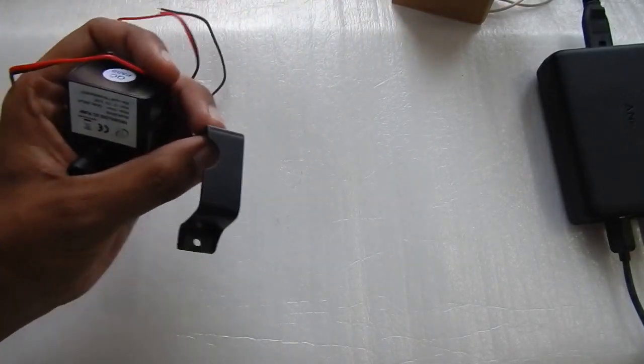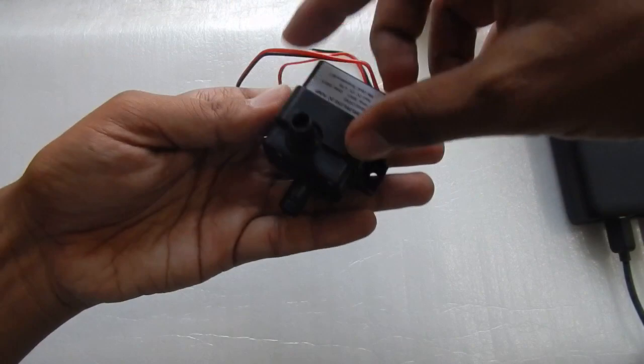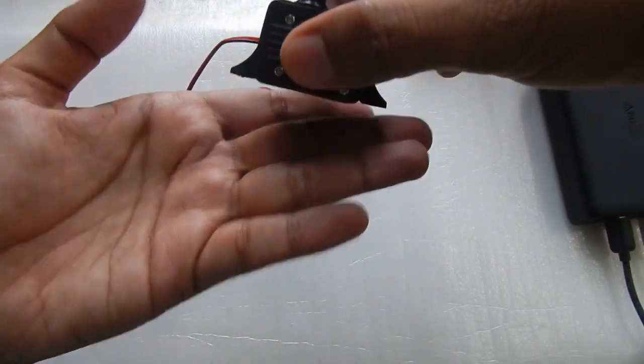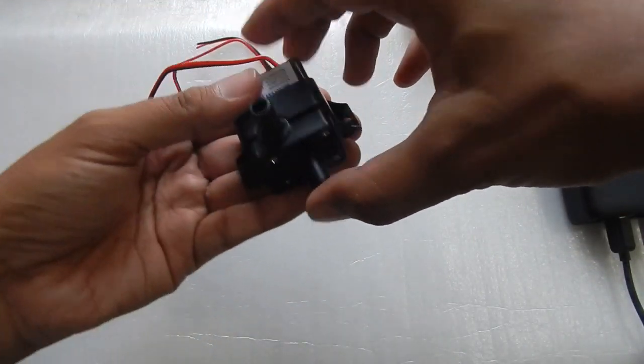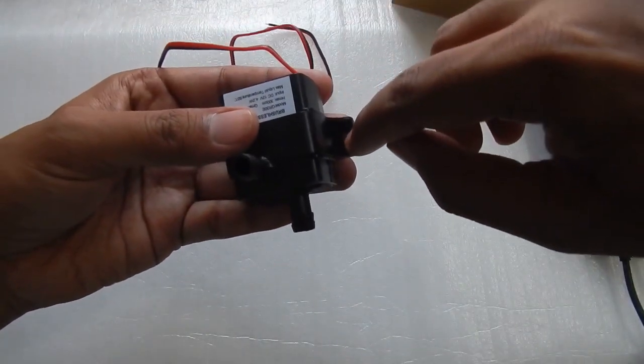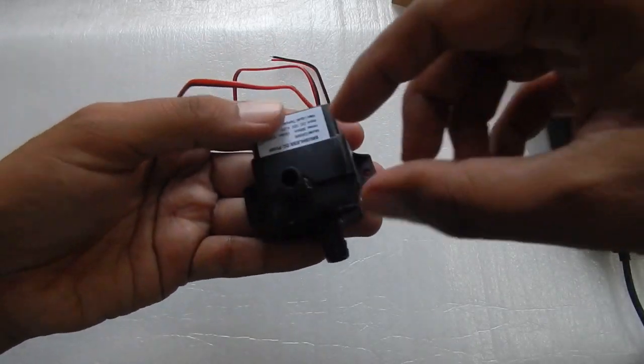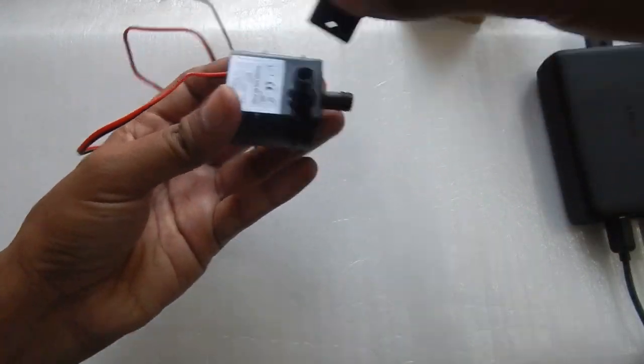It also comes with a small bracket so that you can install it anywhere you like. Once the bracket goes on top you can put a small piece of board or any surface and then you can secure the pump using these screw holes. So let me just remove it and show you the close-up of the pump.